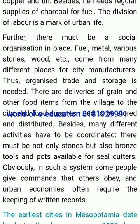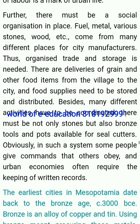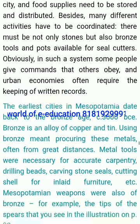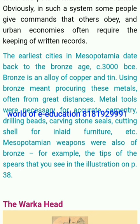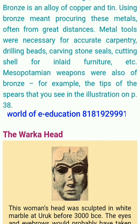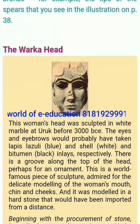Organized trade and storage are needed. There are deliveries of grain and other food items from the village to the city, and food supplies need to be stored and distributed. Many different activities have to be coordinated, and urban economies often require the keeping of written records. The earliest cities in Mesopotamia date back to the Bronze Age, around 3000 BCE. Bronze is an alloy of copper and tin. Using bronze meant procuring these metals, often from great distances. Metal tools were necessary for accurate carpentry, drilling beads, carving stone seals and cutting shell for inlaid furniture. Mesopotamian weapons were also of bronze, for example the tips of spears. This woman's head was sculpted in white marble at Uruk before 3000 BCE — the eyes and eyebrows would probably have taken lapis lazuli, shell and bitumen inlays respectively. It is a world-famous piece of sculpture admired for the delicate modeling of the woman's mouth, chin and cheeks, modeled in a hard stone that would have been imported from a distance.